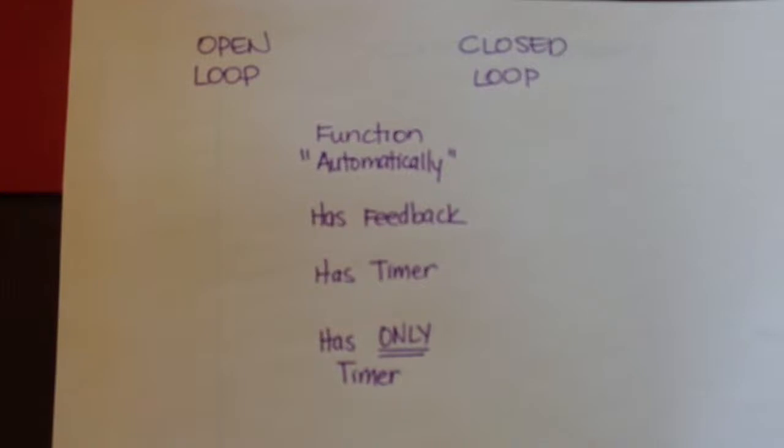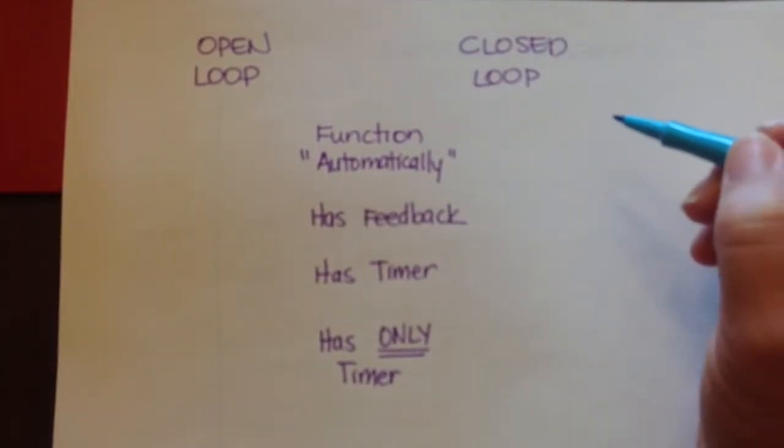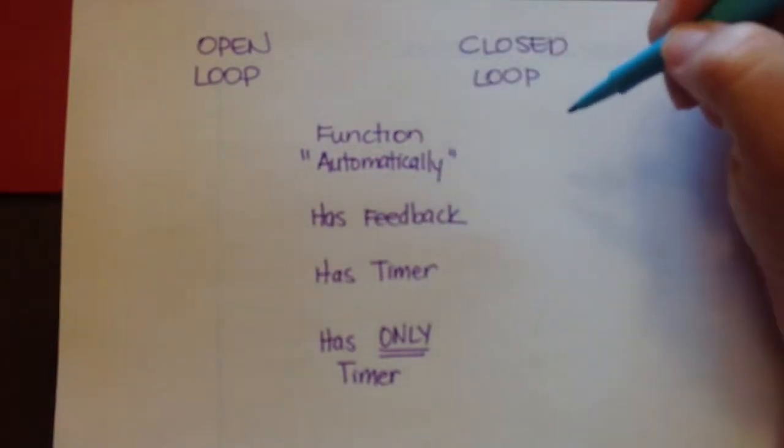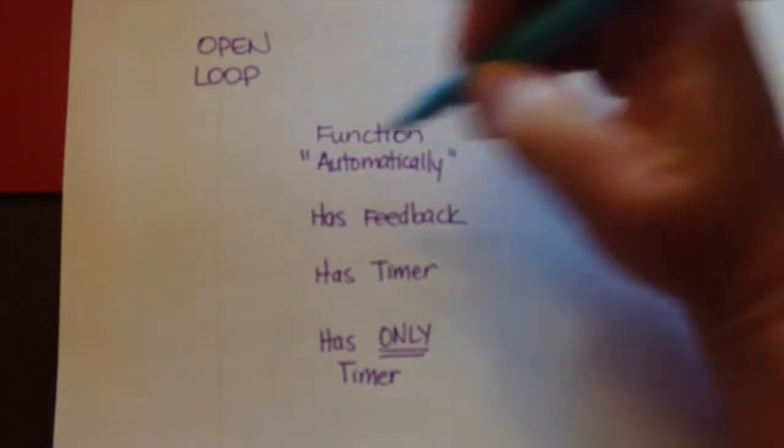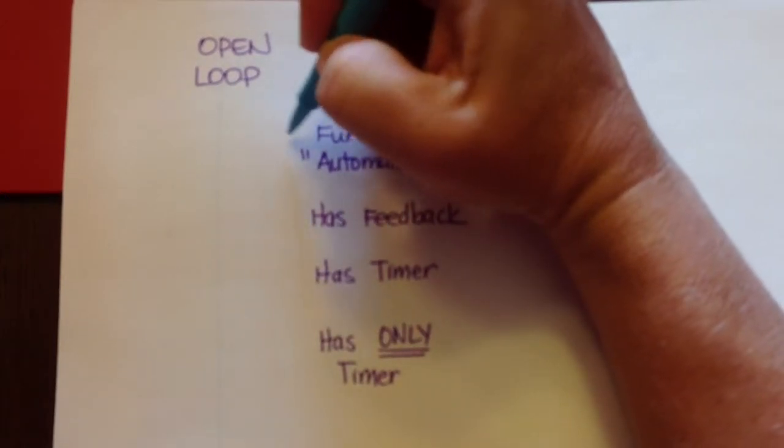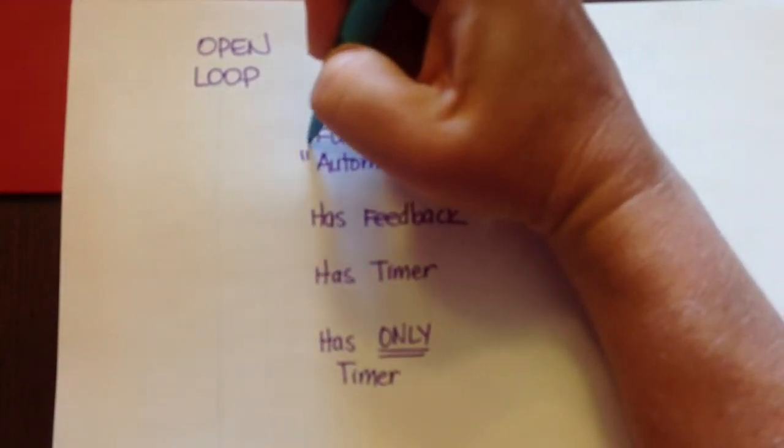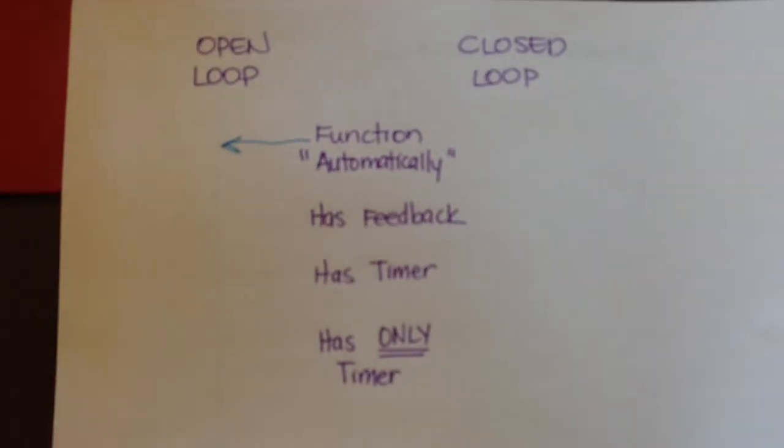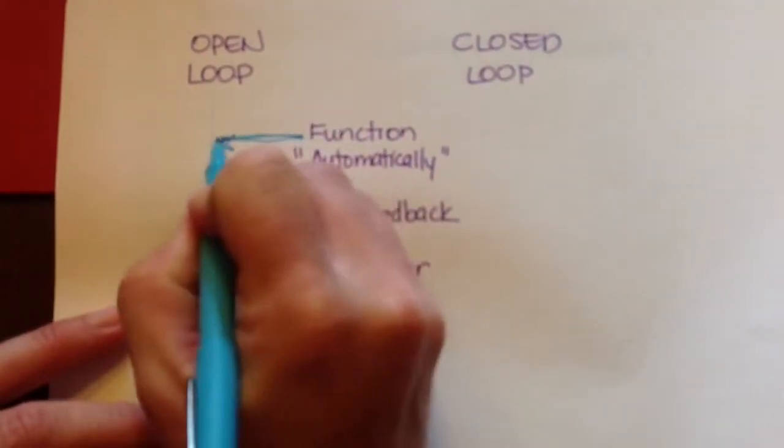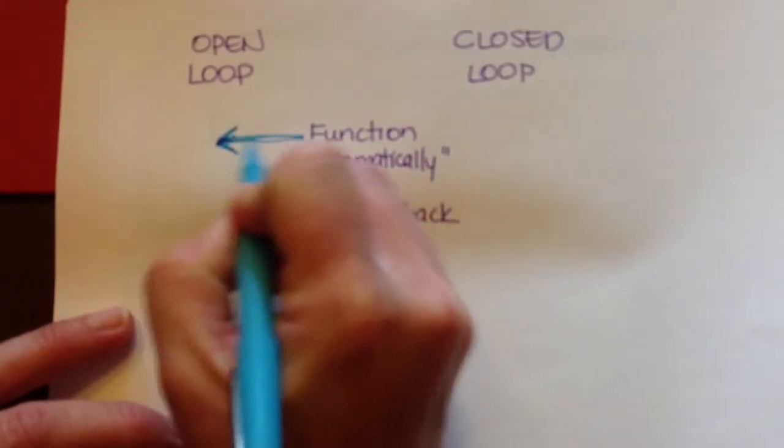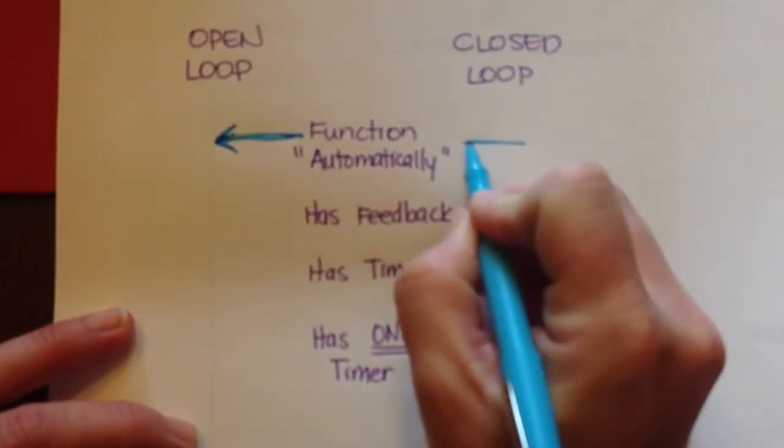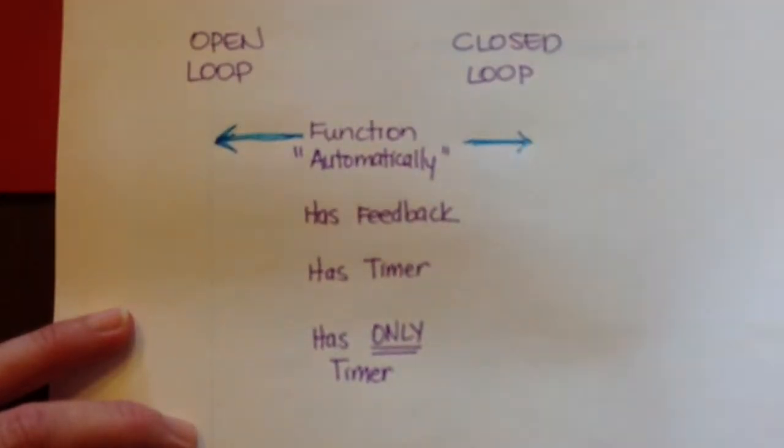So let's talk about control systems associated with that automation. We basically have two types, and depending on how you look at these, you can say that both of these function automatically. We can say that both open loop and closed loop function automatically.